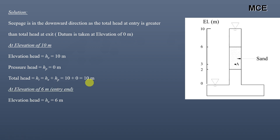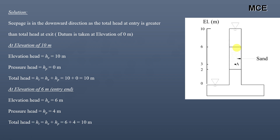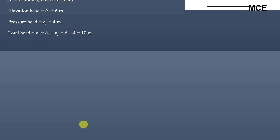At the entry end, which is at the elevation of 6 meters, the elevation head is 6 meters. Since water has a height of 4 meters above this end, the pressure head is 4 meters. Total head is elevation plus pressure, which is 6 plus 4, equals 10 meters. This is the total head at the entry end.